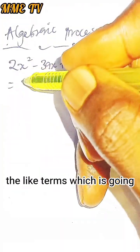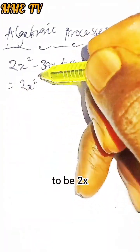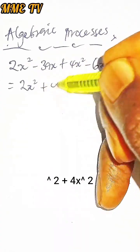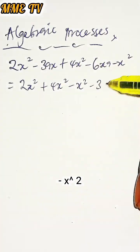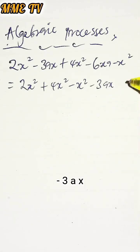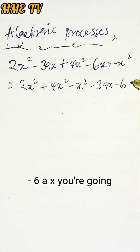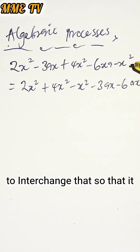- x² - 3ax - 6ax. You are going to interchange that so it will be easier for you. When you now simplify this, you'll be having 5x²